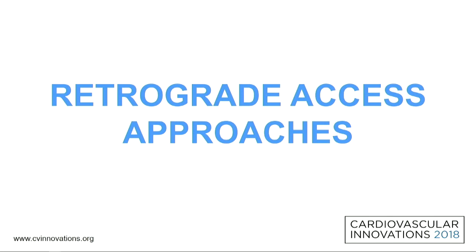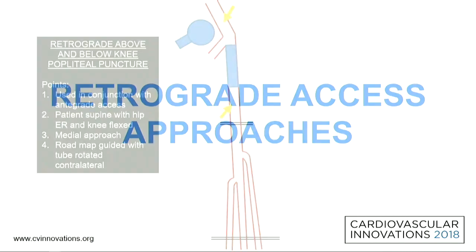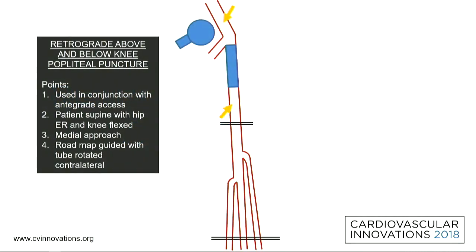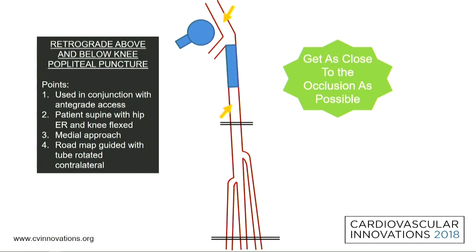If you fail from antegrade, the next step in my practice is a retrograde access approach. For SFA disease it should always be used in conjunction with an antegrade access. The patient is positioned supine with the hip externally rotated and the knee flexed — the frog-leg position. It's a medial approach; I use roadmap and/or fluoroscopy, though ultrasound works well too since the SFA is easy to see and you can also appreciate the position of the vein. If treating proximal SFA disease you can use an above-knee popliteal approach; if disease extends more distally you may need to go below-knee pop. The principle is to get as close to the occlusion as possible while leaving a small amount of working room to manipulate guide wires and catheters.